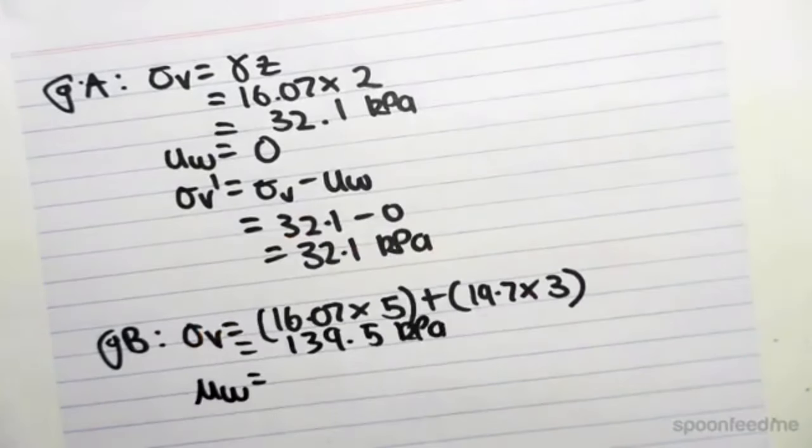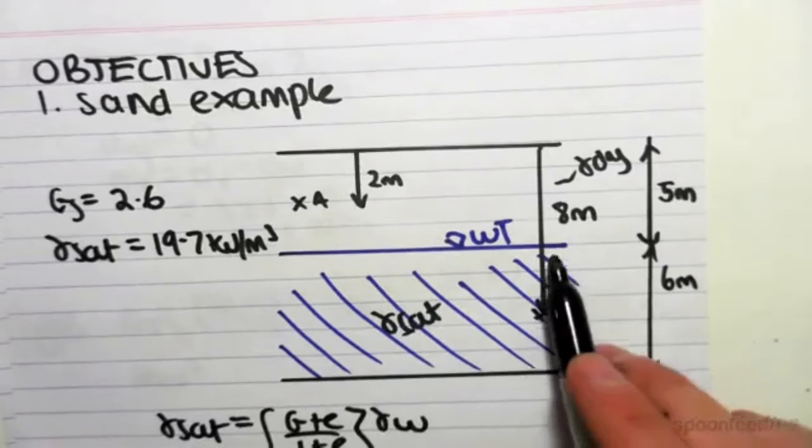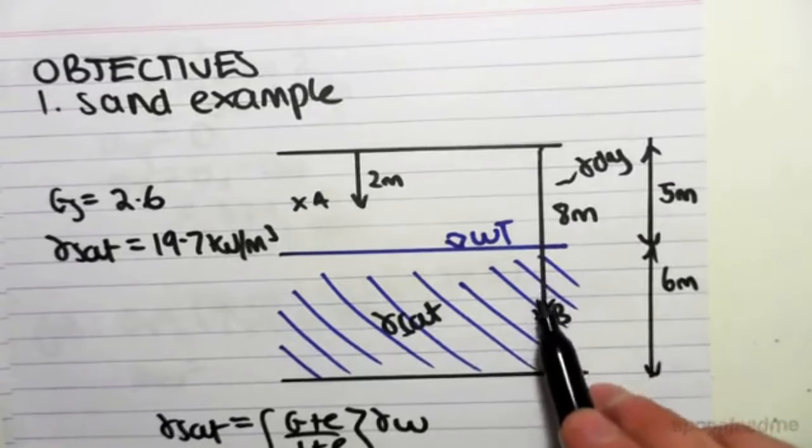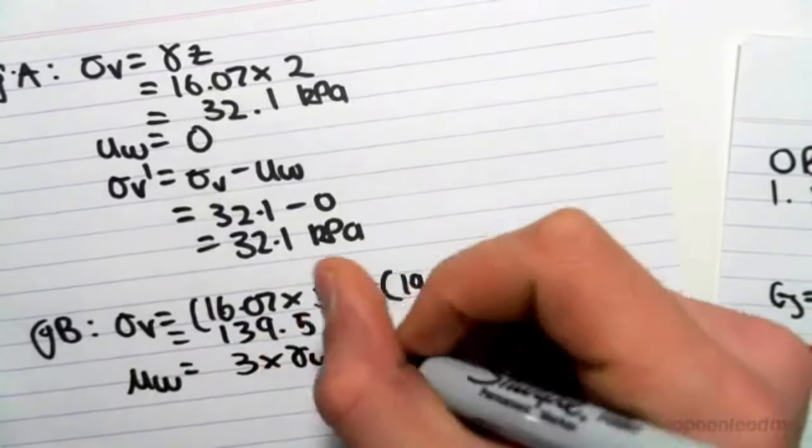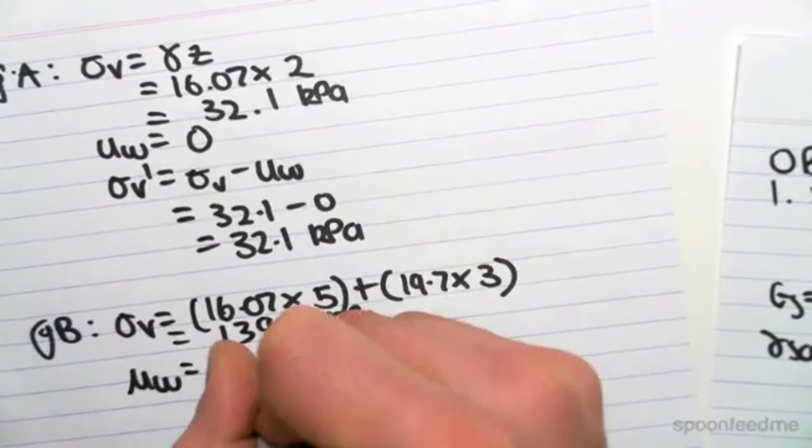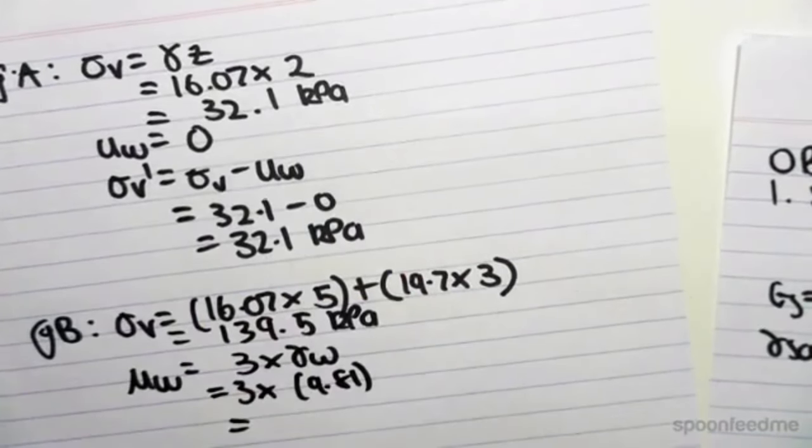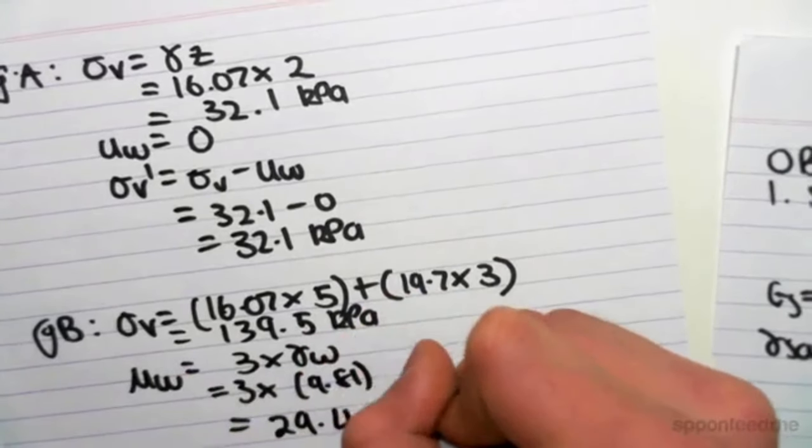We get 139.5 kPa. Now the pore water pressure at point B, we have 3 meters of water. So the pore water pressure will be 3 times gamma of water, which is 3 times 9.81, which is 29.4 kPa.